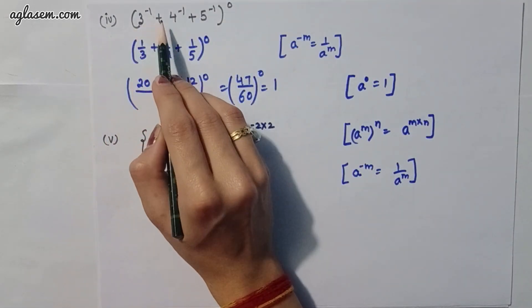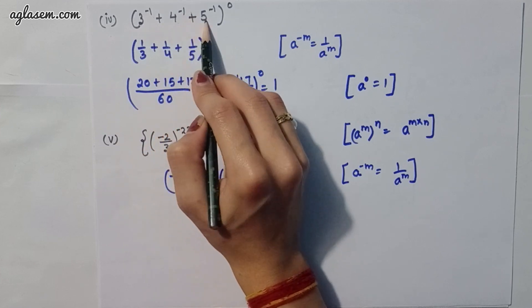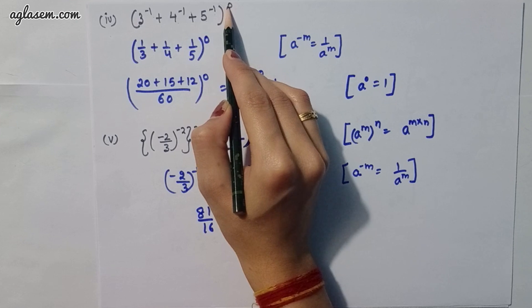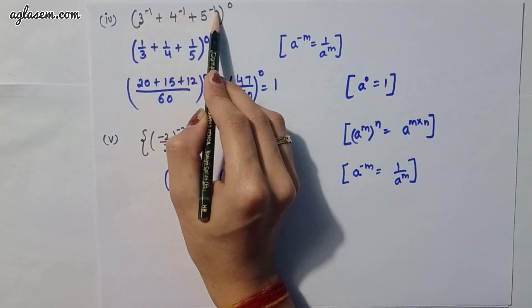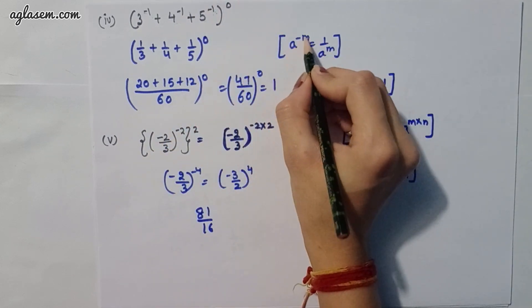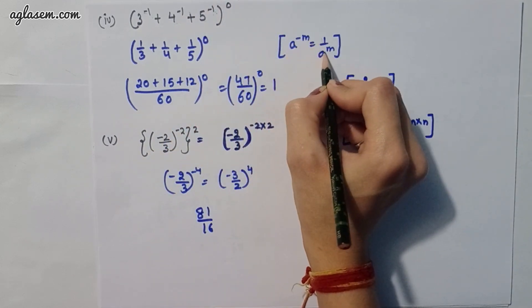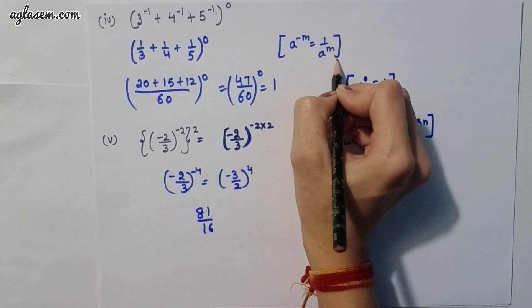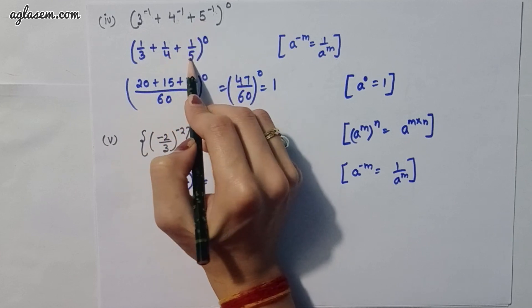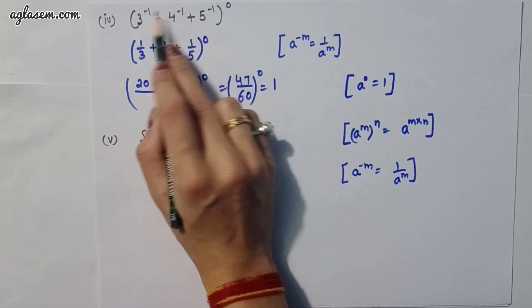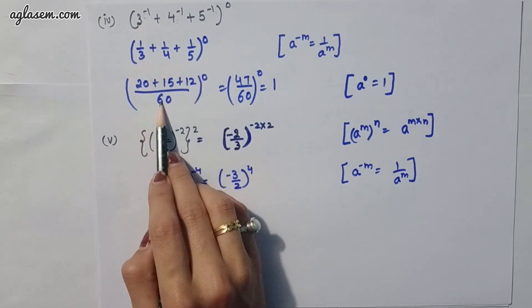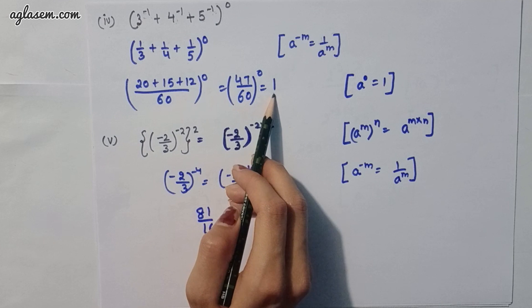Moving to the fourth part: (3^(-1) + 4^(-1) + 5^(-1)) whole power 0. Converting the negative exponents: 3^(-1) = 1/3, 4^(-1) = 1/4, 5^(-1) = 1/5. Taking LCM of 60 and simplifying, then applying a^0 = 1, the answer is 1.